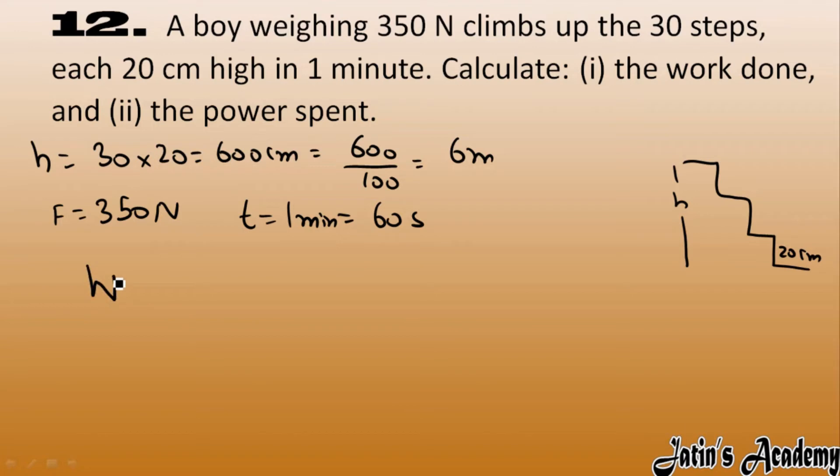Force value we have is 350, and displacement we have is the height, which is 6 meters. So 350 into 6, we get 2100 joules as the work done. Now we have to calculate the power.